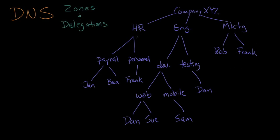HR is a little bit bigger, so it is subdivided into payroll and personnel, each one of which has a couple of people in it. And then engineering is the biggest division of all. It's divided up into development and testing. Testing has one person in it, but development is broken up into the web and mobile divisions, each of which has a couple of people in it.